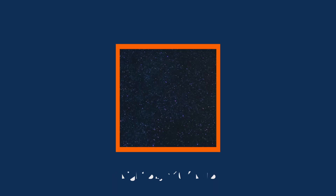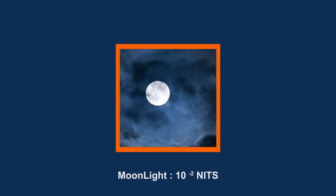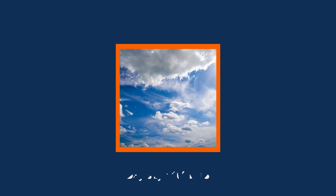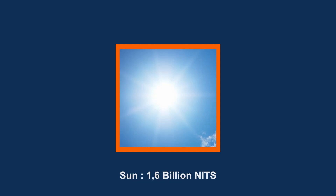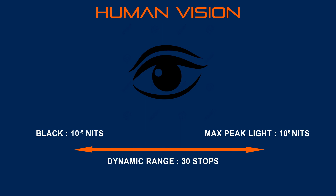Today we talk about dynamic range for TVs, but to be accurate the dynamic range only applies to camera sensors — for TVs we talk about contrast ratio. Looking at this diagram, the absolute black is 0 nits, a starry sky is 10 power minus 6 nits, moonlight is 10 power minus 2 nits, an interior at day is approximately 100 nits, a sunny sky is 10 power 4 to 10 power 6 nits, and the maximum measurable intensity — full sun — is 1.6 billion nits. The dynamic range of human vision is between 10 power minus 5 and 10 power 6 nits, or 30 stops — a very large dynamic range that none of our display systems can broadcast.